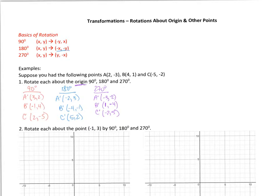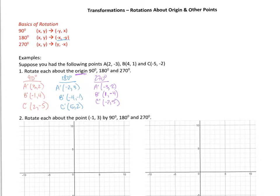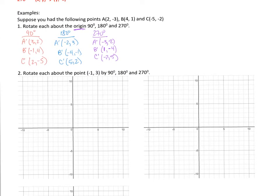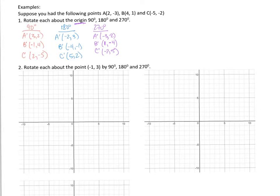So now, what if it wasn't about the origin? What we need to do in that case is break it down into distances from the point we're rotating about. Suppose we rotate the same points A, B, and C about the point (-1, 3). Let's call this point P, and we're going to rotate about point P.